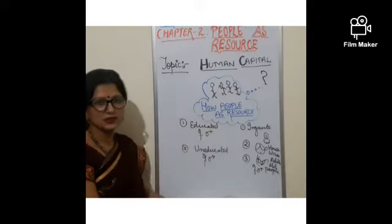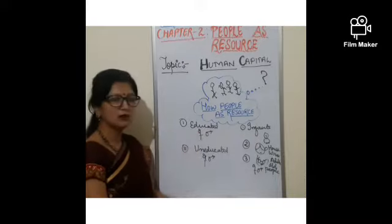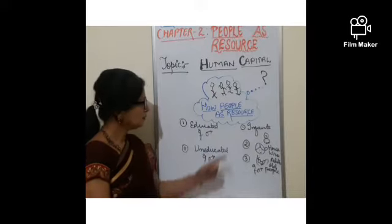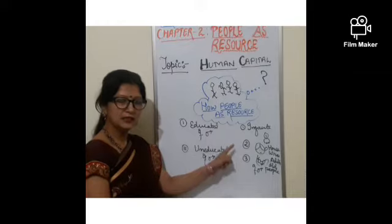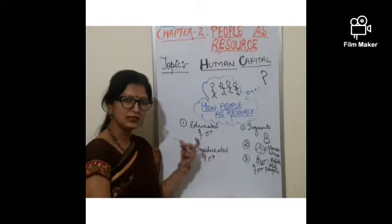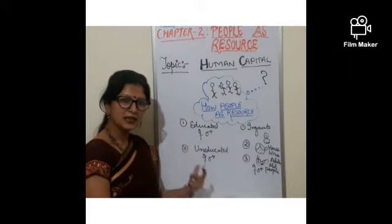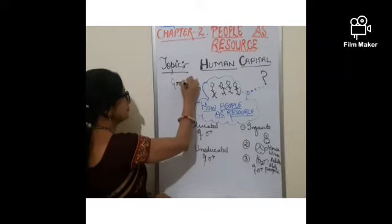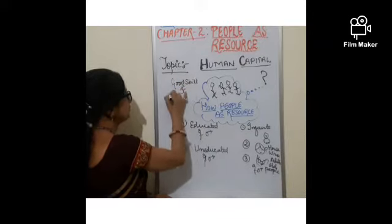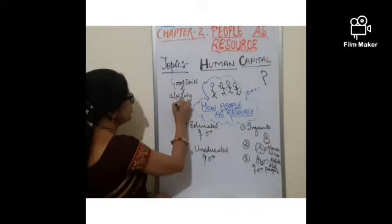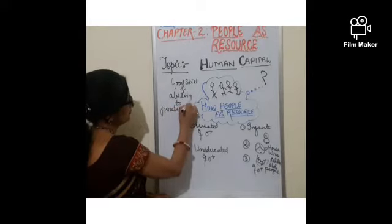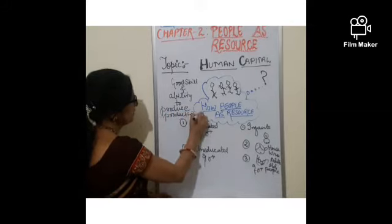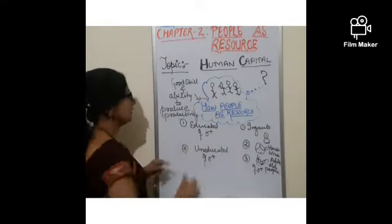Now, how do we consider people as resource? When we analyze the complete population system, we categorize which type of population can be considered a resource. People who have good skill and ability to produce productivity or add to national income are called 'people as resource.'